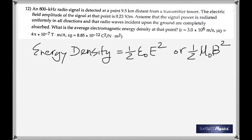And the other is to use one half mu naught B squared. Now in this case, in this problem, there is no mention about the amplitude of the magnetic wave, so obviously this is the formula we are going to use because the amplitude of the electric wave is given and we know the value of epsilon naught.